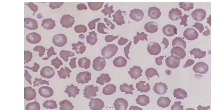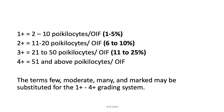Here is an example of a blood smear with many poikilocytes, or many abnormal red blood cells. The grading used for poikilocytosis is as follows: 1+ if there are 2 to 10 poikilocytes per oil immersion field, 2+ for 11 to 20, 3+ for 21 to 50, and 4+ for 51 or more. You can also see the relative percentage of poikilocytes to the number of red blood cells beside each grading. Terms such as few, moderate, many, and marked may be substituted for the 1+ to 4+ grading system in some hospitals.